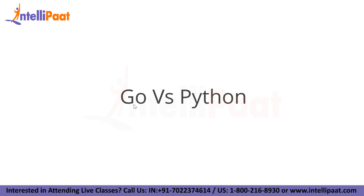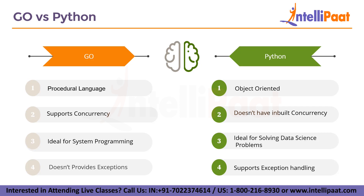Python has been around for more than 30 years but its popularity continues to rise. Python and Go are two of the most popular and user-friendly programming languages today, both supported by all major cloud providers. Go is a procedural language while Python is object-oriented. Go supports concurrency but Python does not have built-in concurrency. Go is ideal for system programming while Python is ideal for data science. Go doesn't provide exceptions, whereas Python supports exception handling.